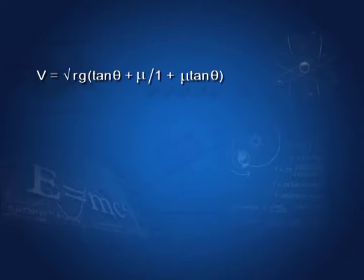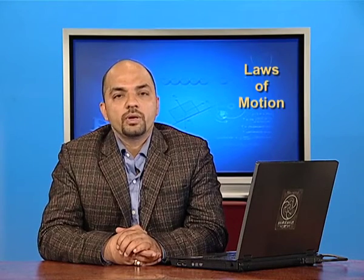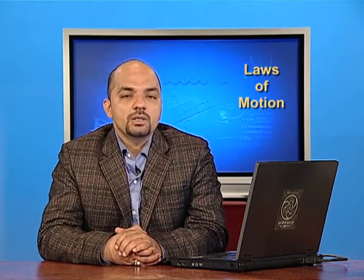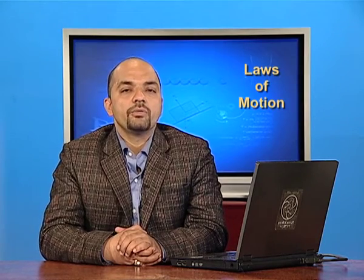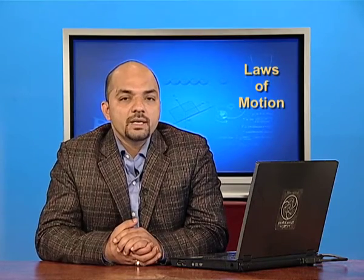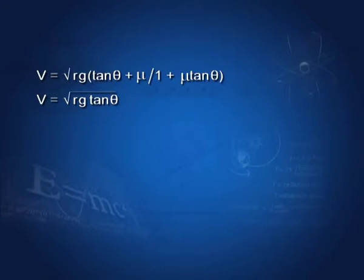The velocity V equals under root of Rg(tan theta plus mu) divided by (1 plus mu tan theta). By substituting the value of radius and theta, we can calculate the maximum velocity for safe turning on a given road. If force of friction is not available, we substitute mu equals 0. So the maximum velocity V equals under root of Rg tan theta.